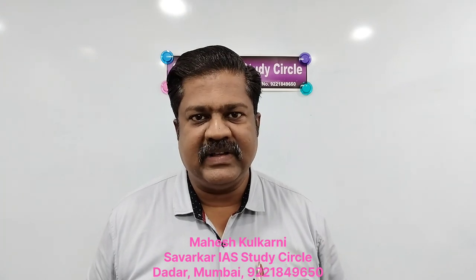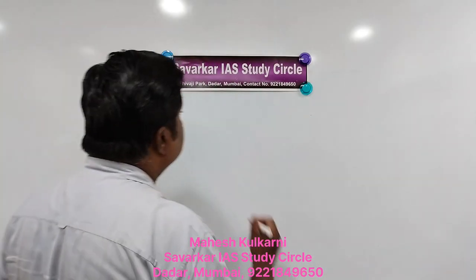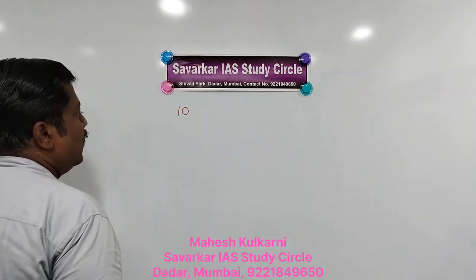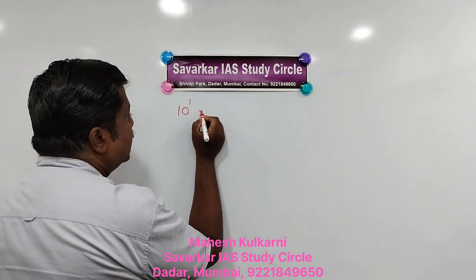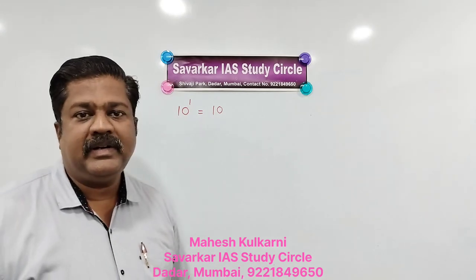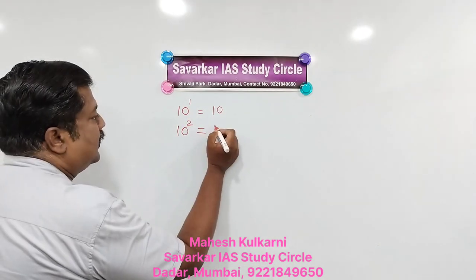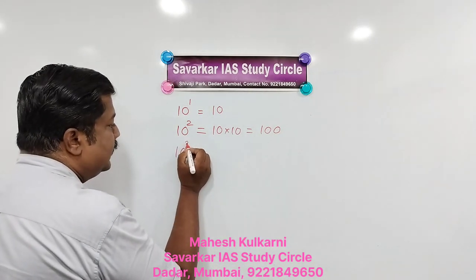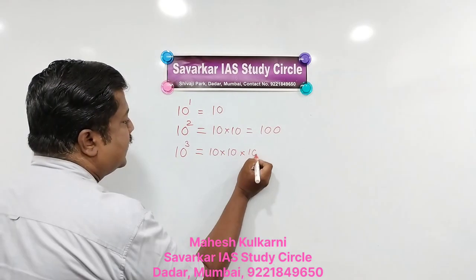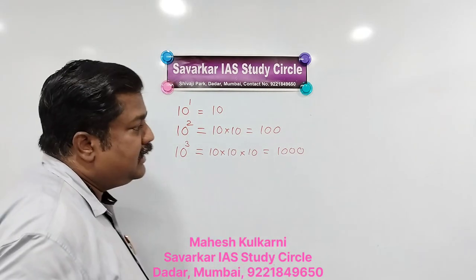First, you must be aware of indices. So laws of indices — it is easy. I will explain the very simple part: multipliers of 10. So 10 raised to 1 equals 10. 10 raised to 2 means 10 × 10, so the answer is 100. 10 raised to 3 means 10 × 10 × 10, so the answer is 1000, and so on. This way we can find out indices particularly about powers of 10.